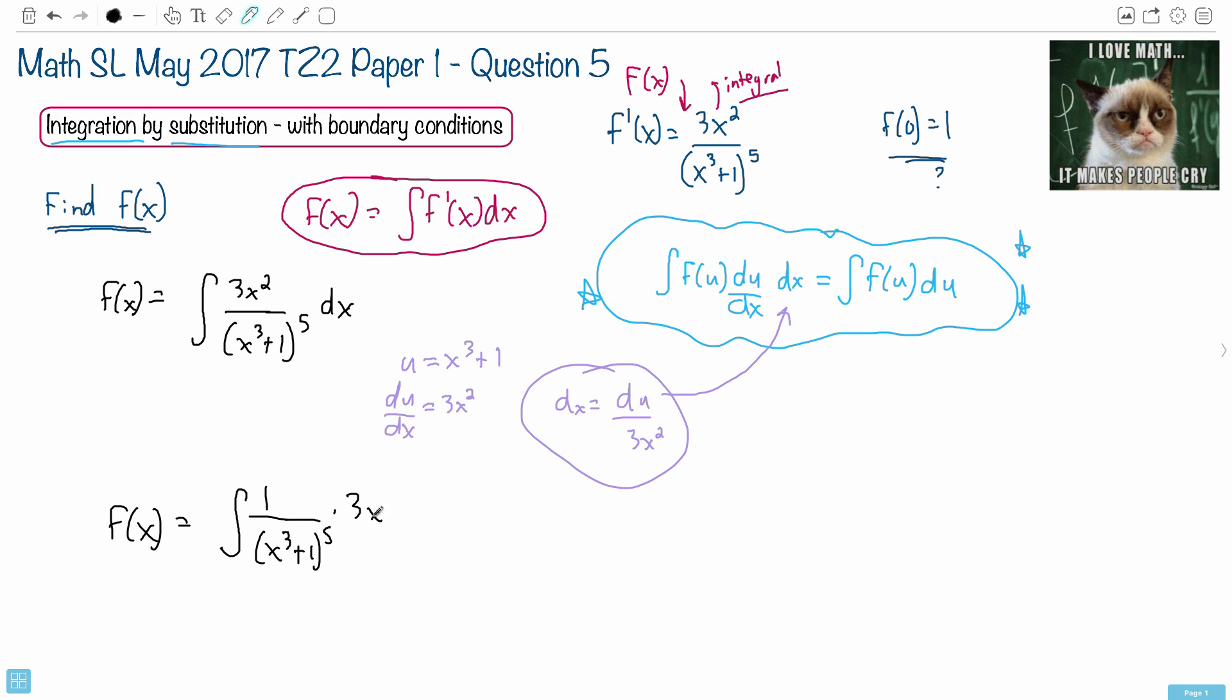Let's just see this as two separate things. This is x cubed plus 1 to the 5, like this. It's like 1 over that, times 3x squared times dx. Do you see how we can actually write it like that? And if we write it like this, it's the same thing. I'm just splitting them up.